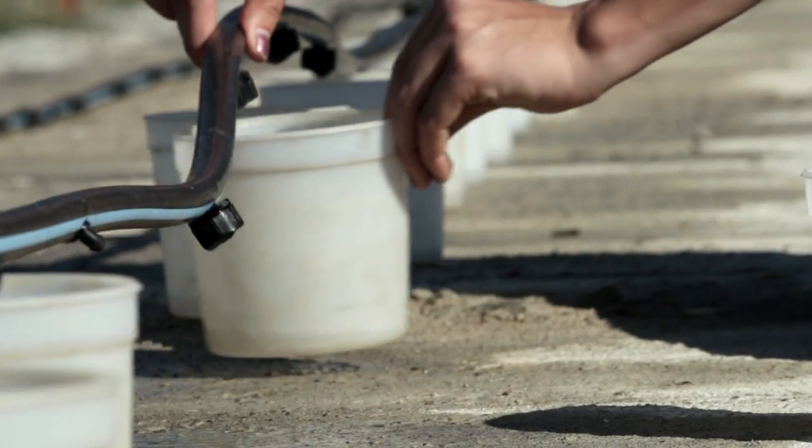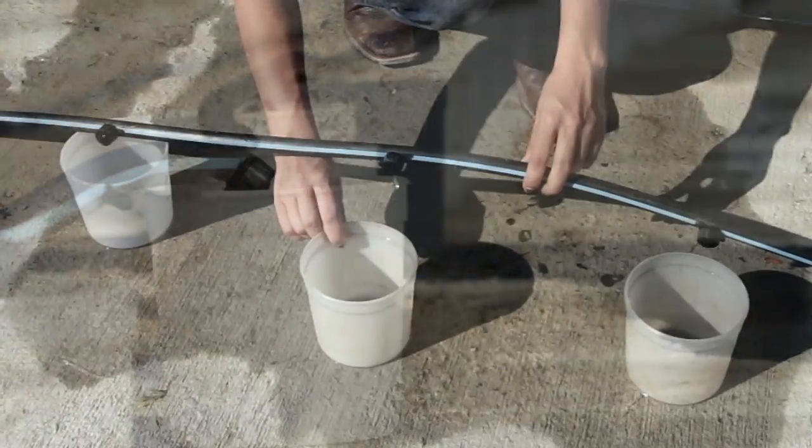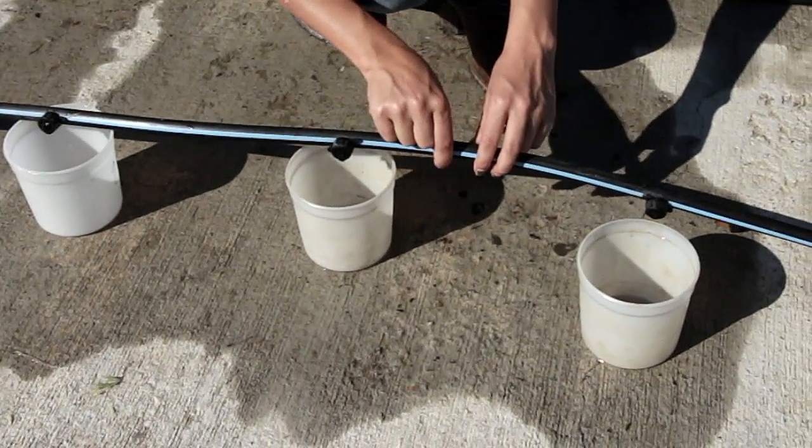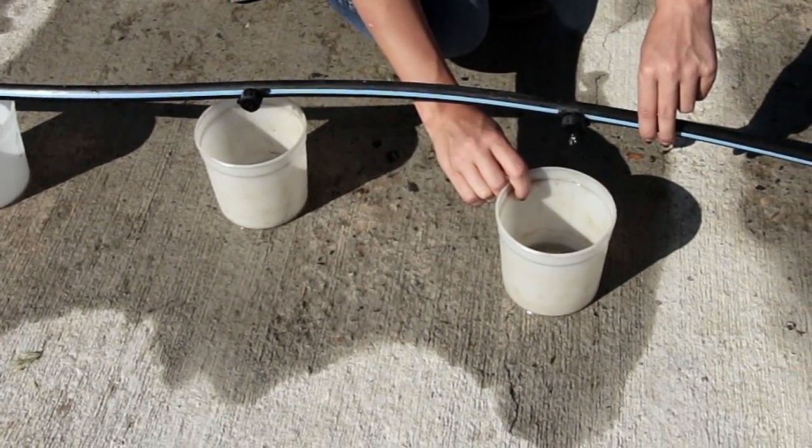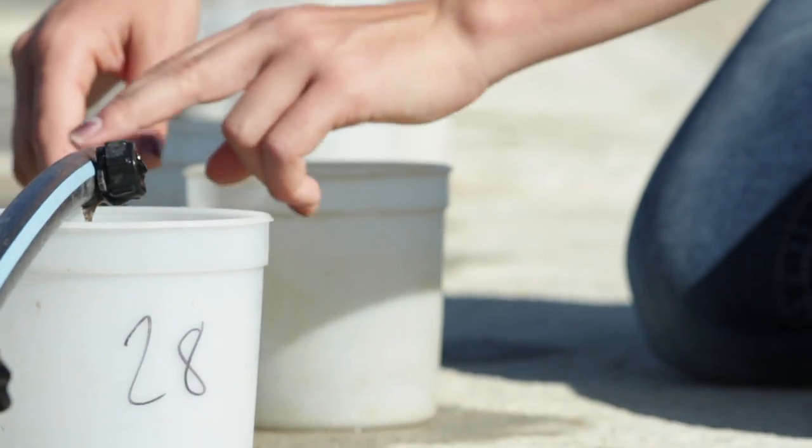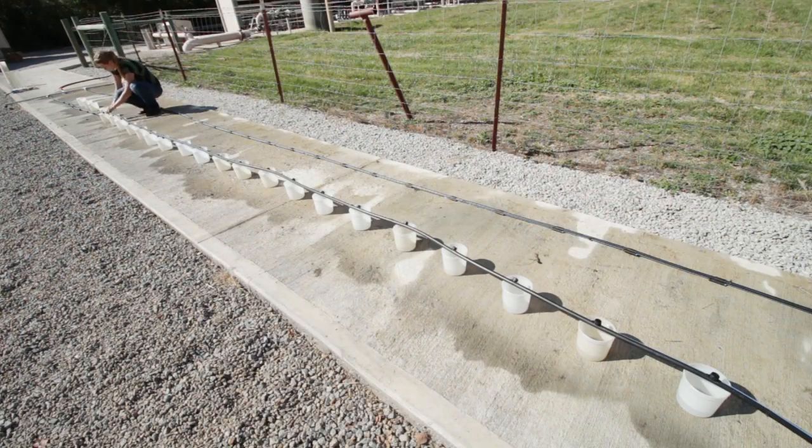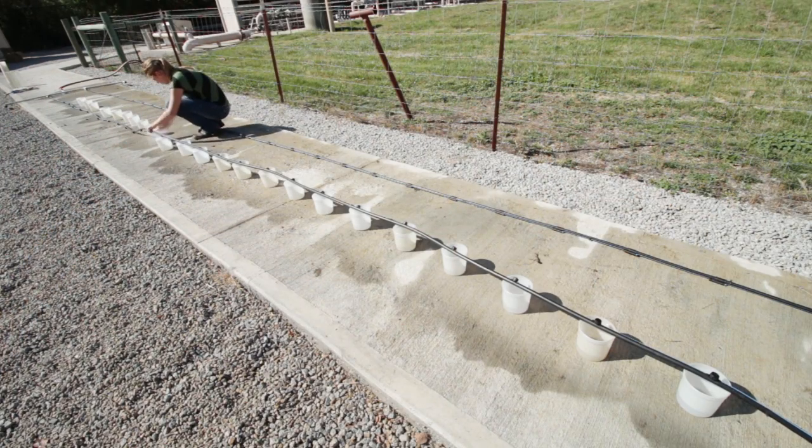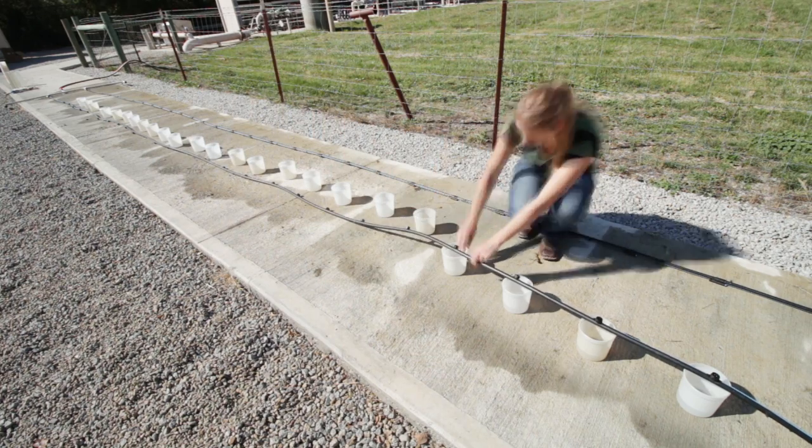Now place 24 catch cans under the hose emitters near the middle and collect water for 5 minutes. To ensure each catch can is exposed to the emitter for the same amount of time, start the stopwatch after placing the first can, then place one can every 10 seconds. When 5 minutes is done, pull the first can, then pull the following cans after each 10 second interval.